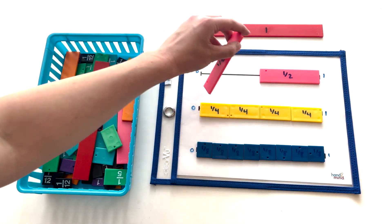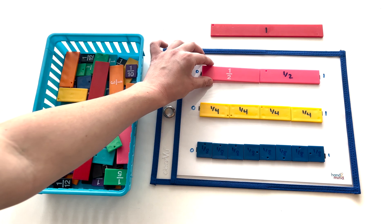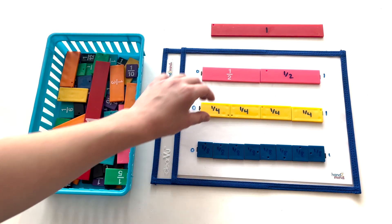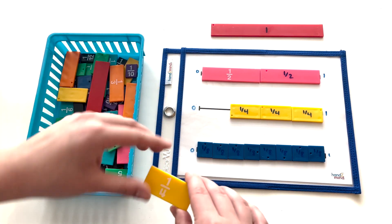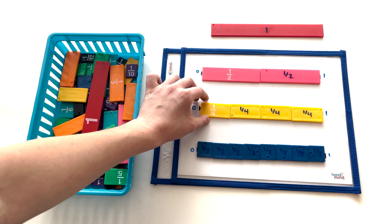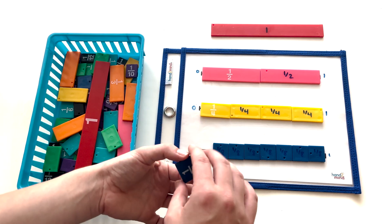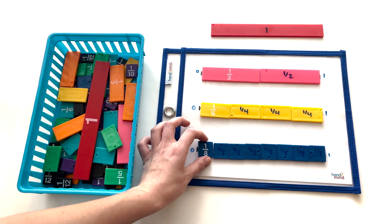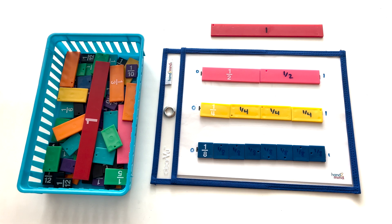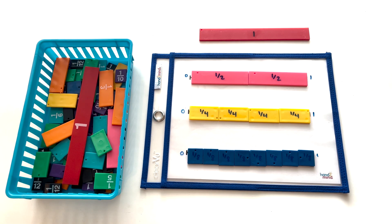What's great about using both sides of the fraction tiles is that this activity now becomes self-checking. Your students have gone through the exploration, they've made their own discoveries about how many fraction tile pieces equals one whole, and just by flipping the pieces over, they can see if their answer is correct or incorrect.